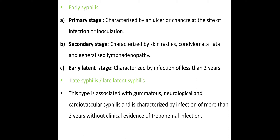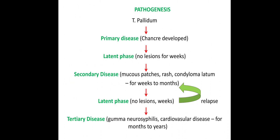Looking at the pathogenesis: when the bacteria enters the body, a chancre develops as a painless lesion. This is the latent phase, where lesions develop over a few weeks. In secondary disease, mucous patches, rash, and condyloma lata develop over weeks to two months.